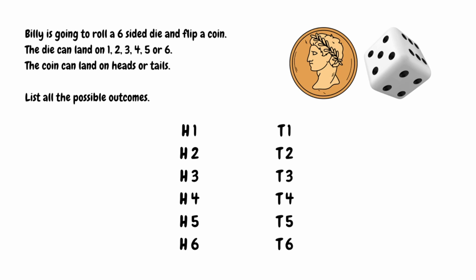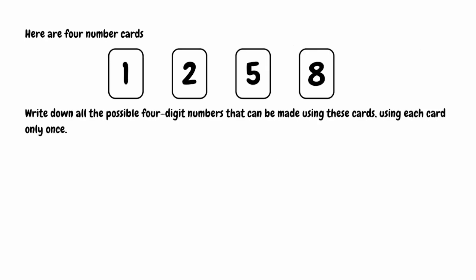Let's look at the next example. We're given 4 number cards: 1, 2, 5, and 8. We need to write down all the possible 4-digit numbers that can be made using these cards, and we can only use each card once.